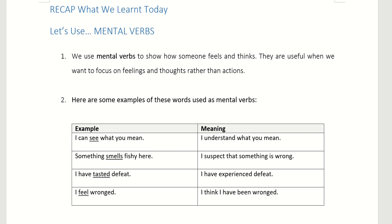Let's do a quick recap. What did we learn today? We learned to use mental verbs to show how someone feels and thinks. Mental verbs are useful when you want to focus on feelings and thoughts rather than actions. Some action words like see, smell, taste, and feel can also be used as mental verbs — for example, 'I see what you mean,' 'something smells fishy here,' 'I've tasted defeat,' 'I feel wronged.' That's all for today's lesson. I hope you understand what mental verbs are and can use them in your essay writing.